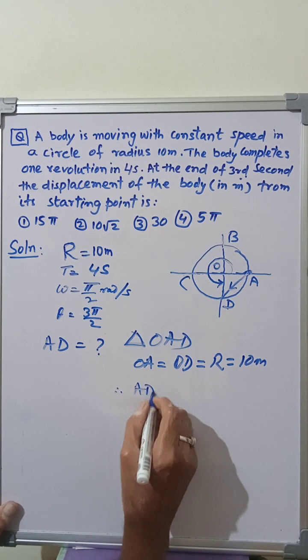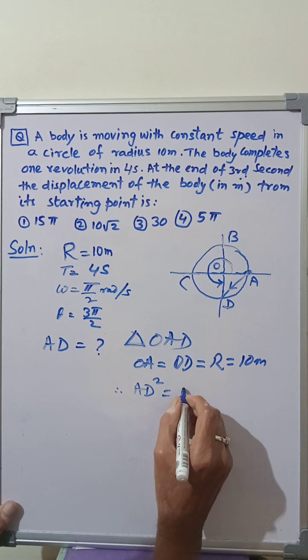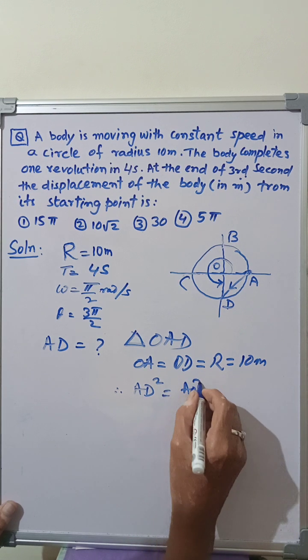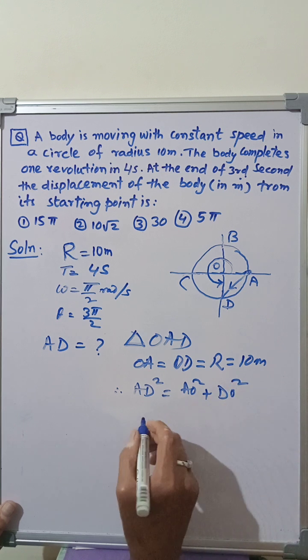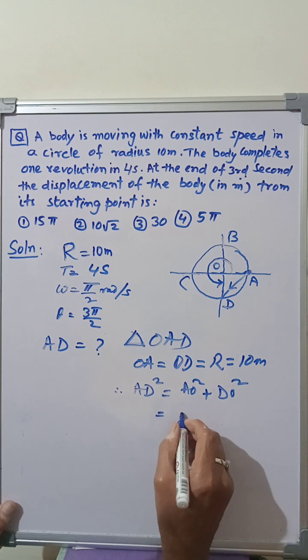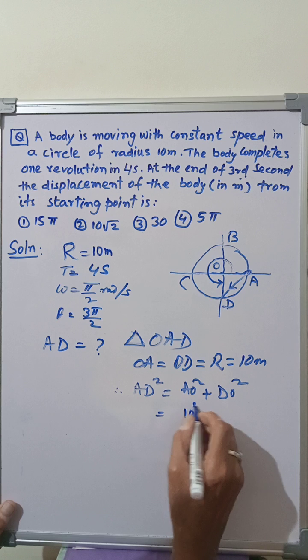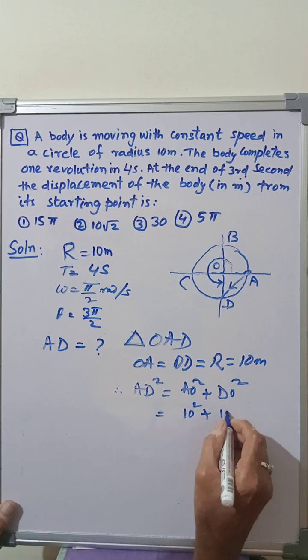Therefore, AD square is equal to AO square plus DO square is equal to 10 square plus 10 square.